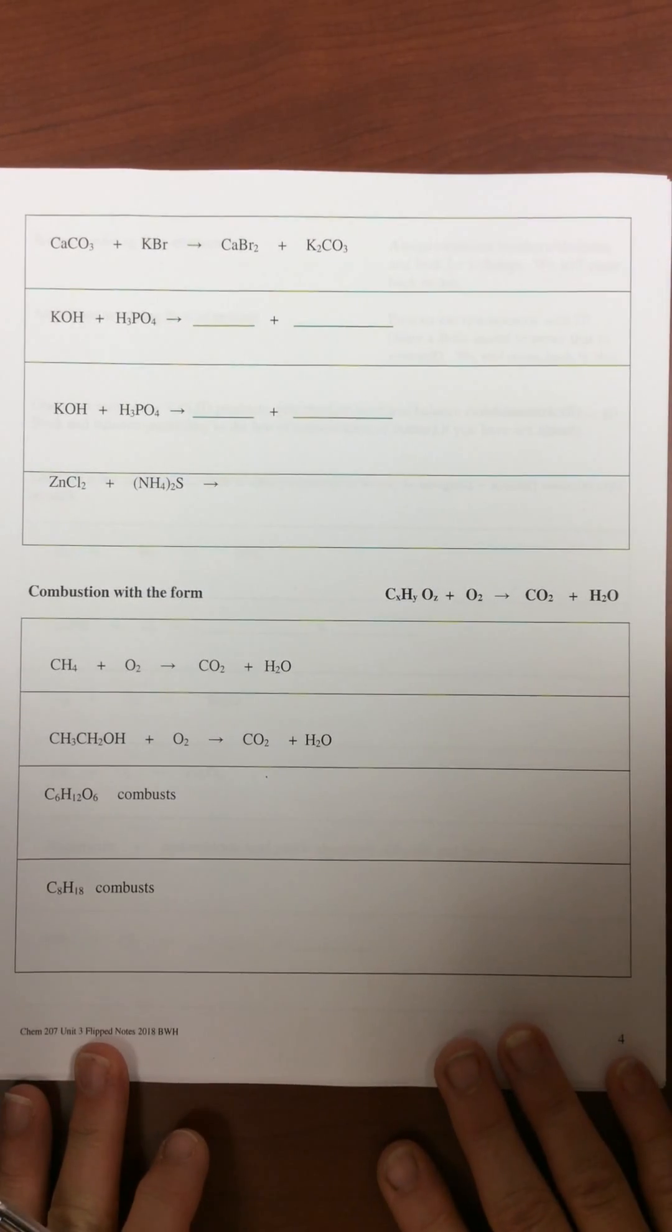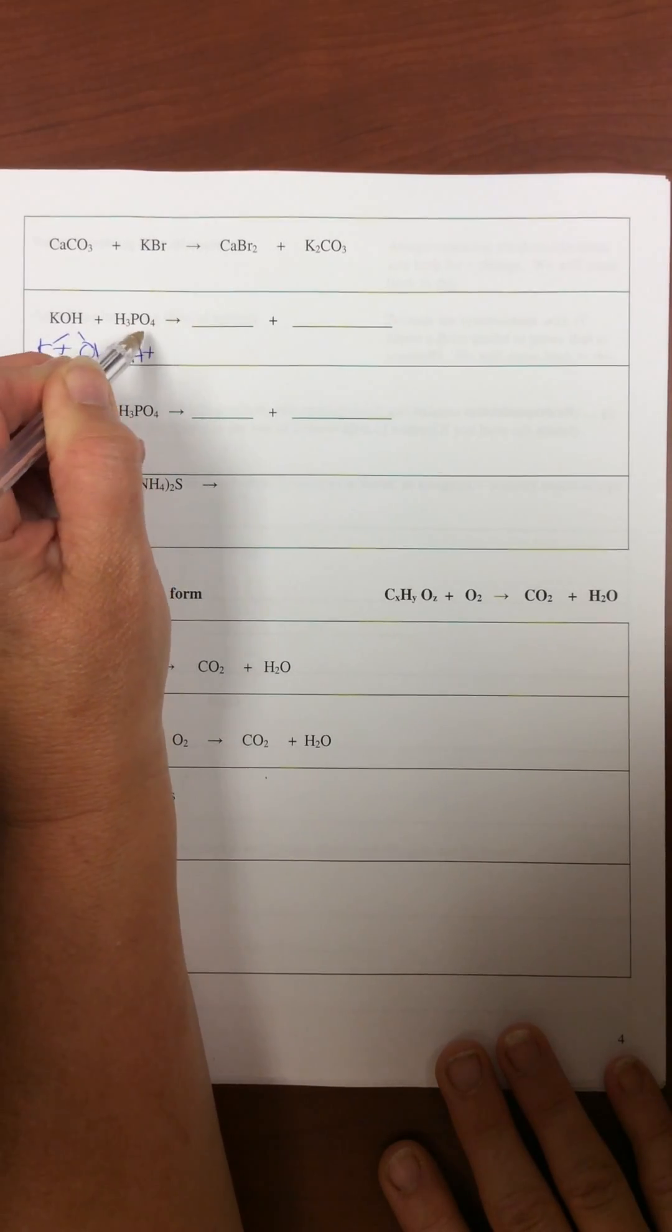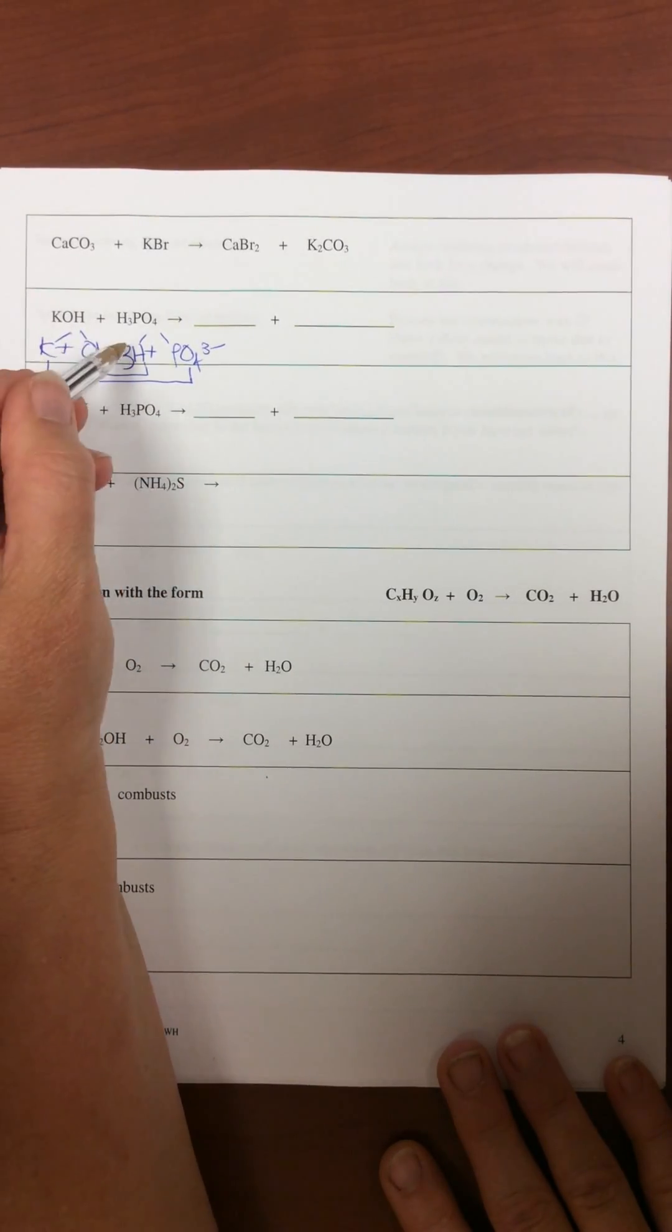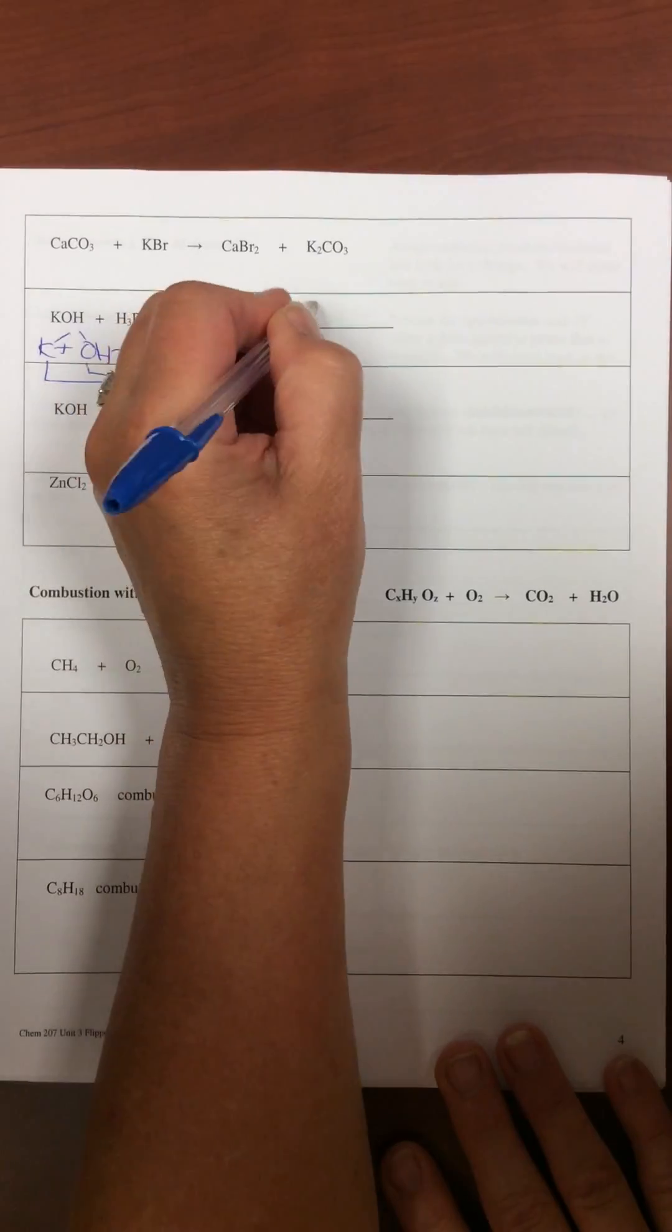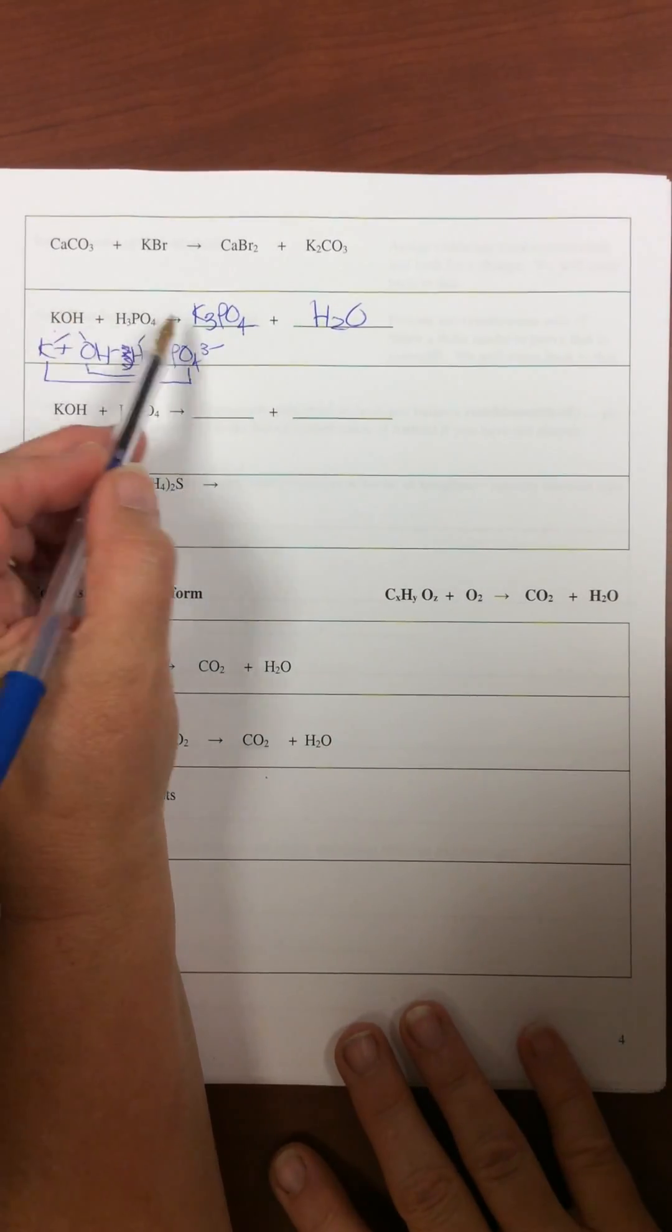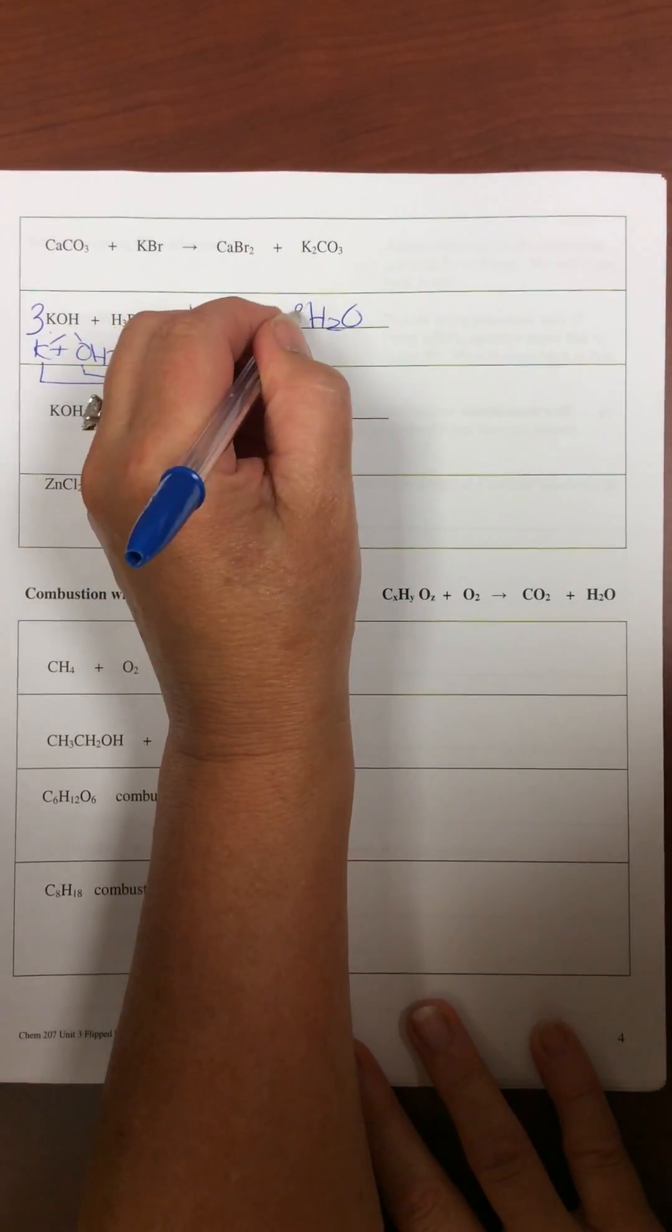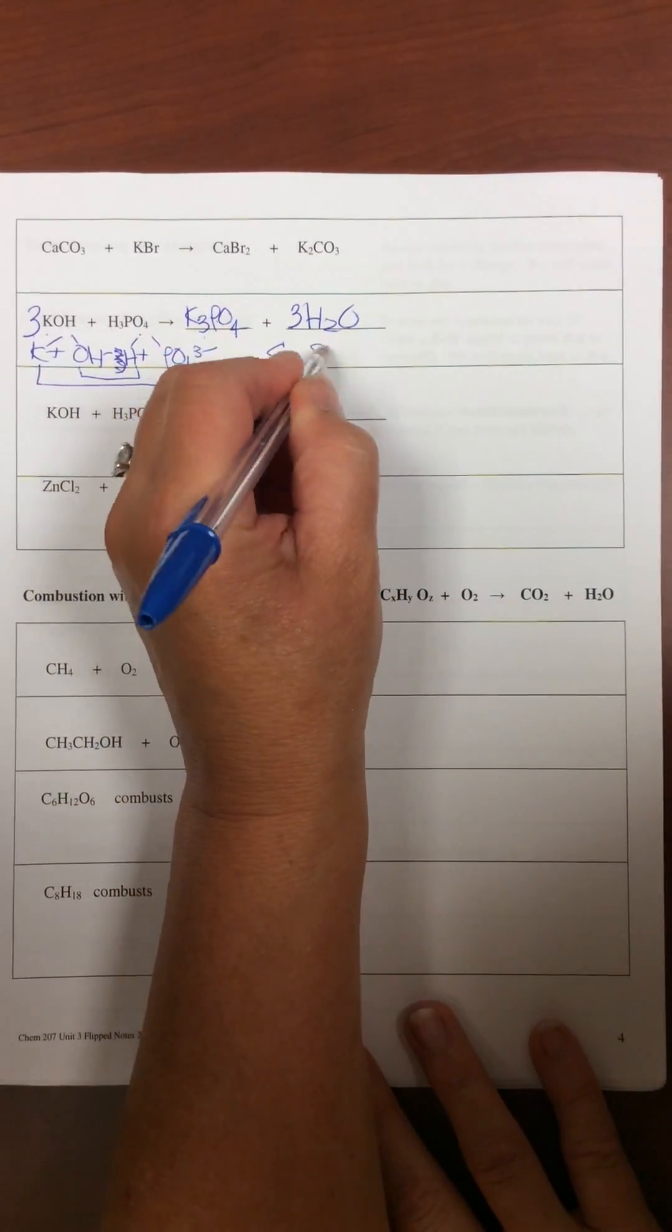On the next page, we'll try a couple, and then I'll let you try these on your own. K plus, OH minus, H plus, PO4 minus, and there are three of them. K plus with the phosphate, H plus with the OH minus. We're going to ignore that there are three of them. We get K3PO4 and H2O. One potassium in, three potassiums out. So we need a three here. One phosphate in, one phosphate out. Three hydroxides, three hydrogens gives us three waters. And the sum is three plus one plus one plus three, which is eight.